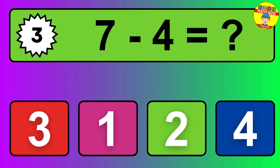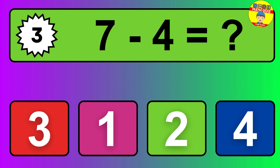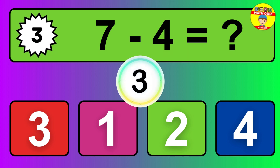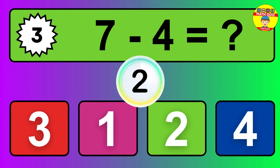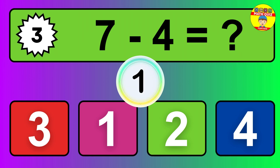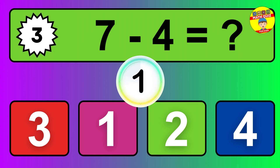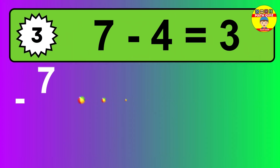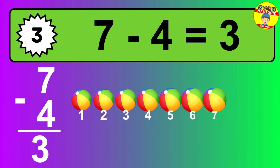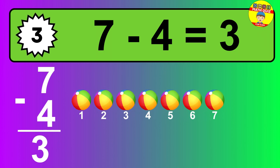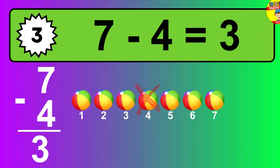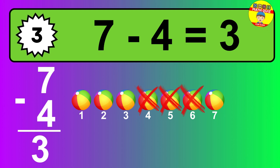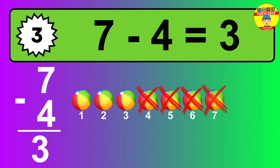Question 3. 7 minus 4 equals what? The answer is 7 minus 4 is 3. Let's count it: 1, 2, 3.